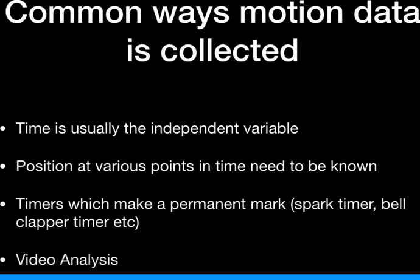You can also get that data from analyzing video, because video typically takes a series of pictures. Common video is played back at either 24 frames per second or 30 frames per second. From that, you can measure the position of an object about 30 times every second.